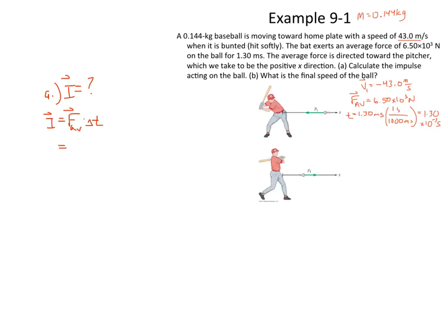Well, I think we have both of those values right there. The force is going to be 6.5 times 10 to the third newtons, multiplied by our time, which is 1.30 milliseconds, or 1.30 times 10 to the negative third seconds. And that's going to be our impulse that is applied to the ball. It's going to be in the positive direction because our force is in the positive direction, and of course time is directionless.